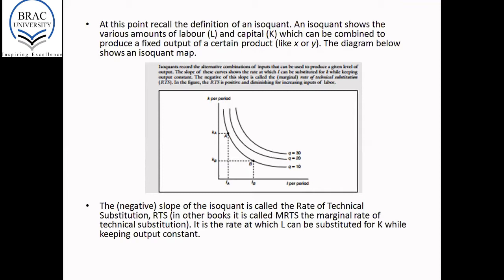However, as you move along the isoquant, the combination of capital and labor used per period changes. So at point A, you're using KA amount of capital combined with LA amount of labor to produce an output of 10. If you move to point B, you're using KB amount of capital and LB amount of labor to produce output equal to 10 again. So remember on the isoquant, the output remains constant.